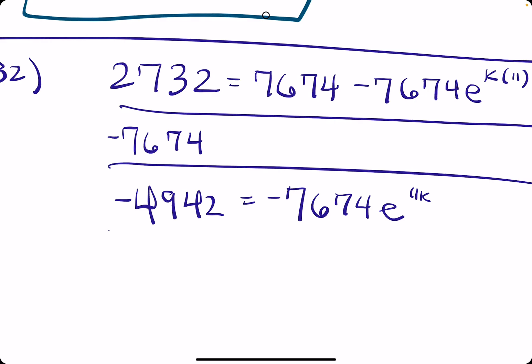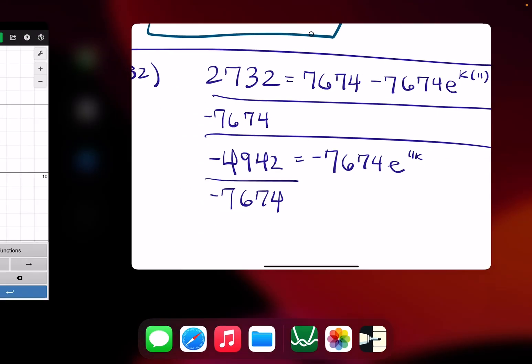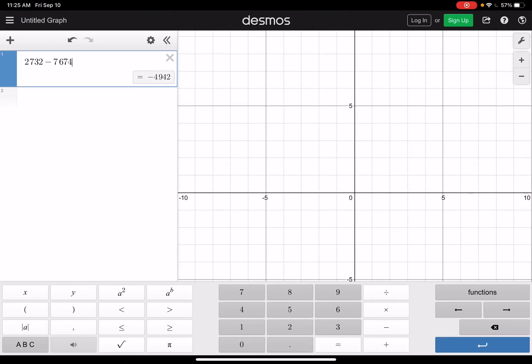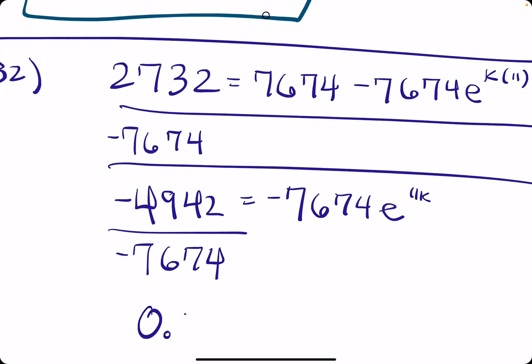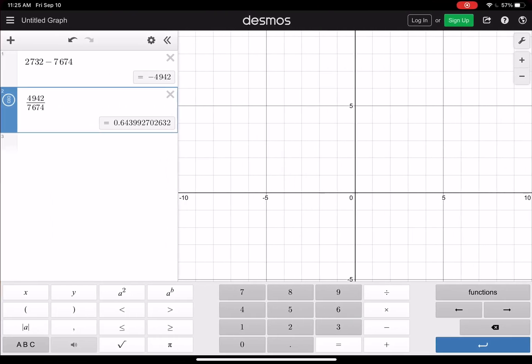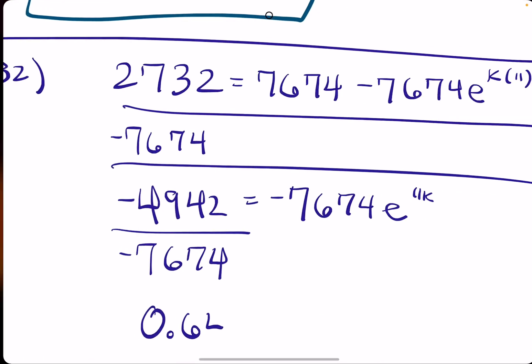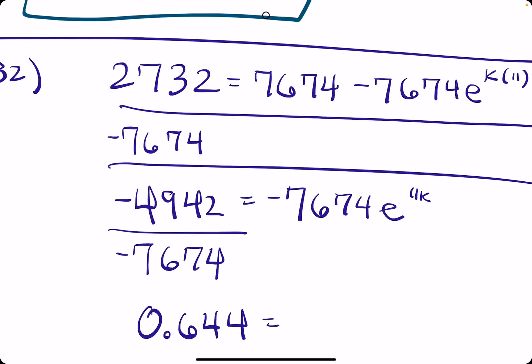We divide by negative 7674. Negative divided by negative should be positive. 4942 divided by 7674 is 0.644 if we round. So 0.644 equals E to the 11K.